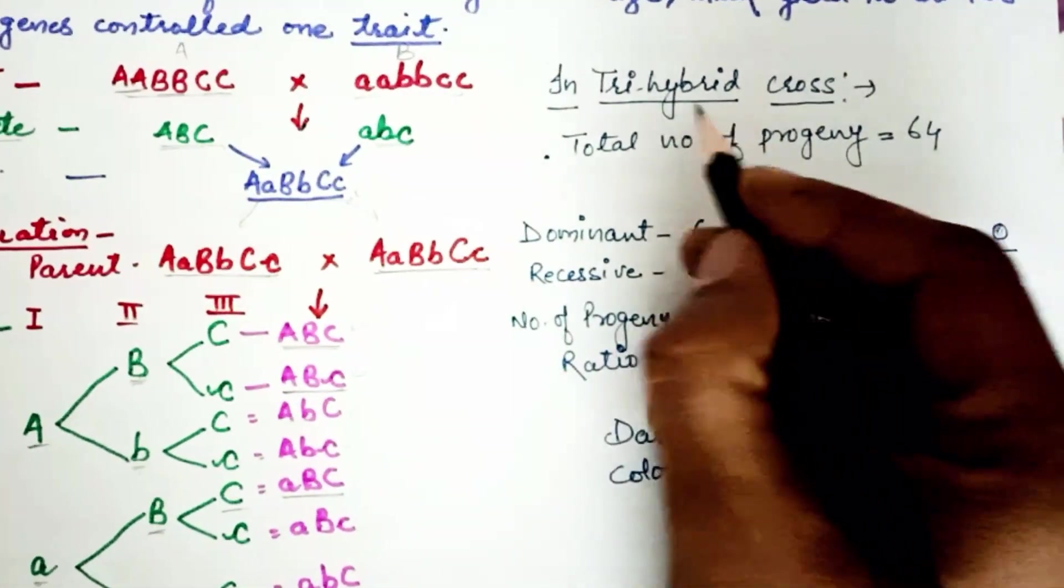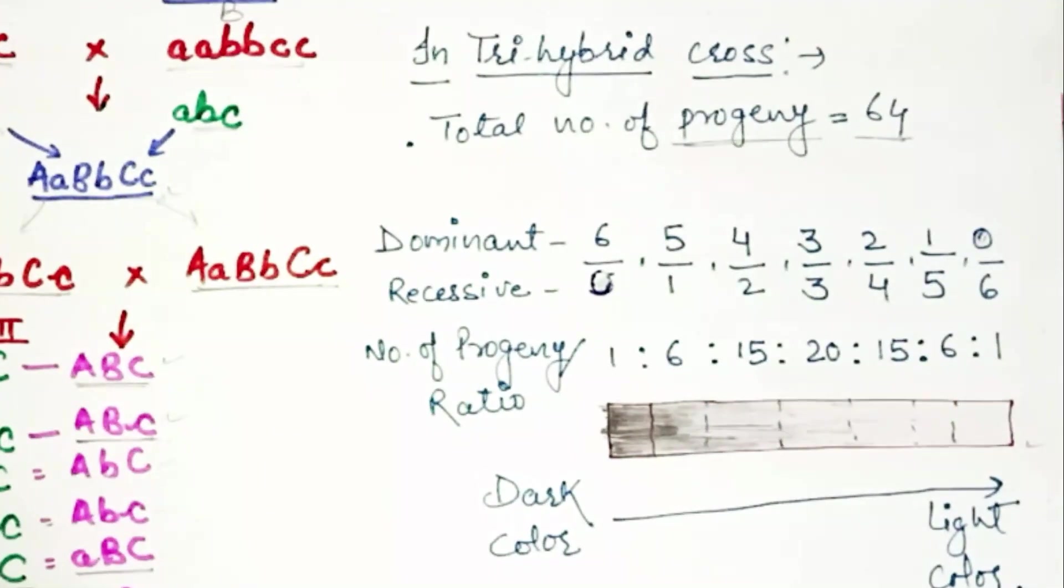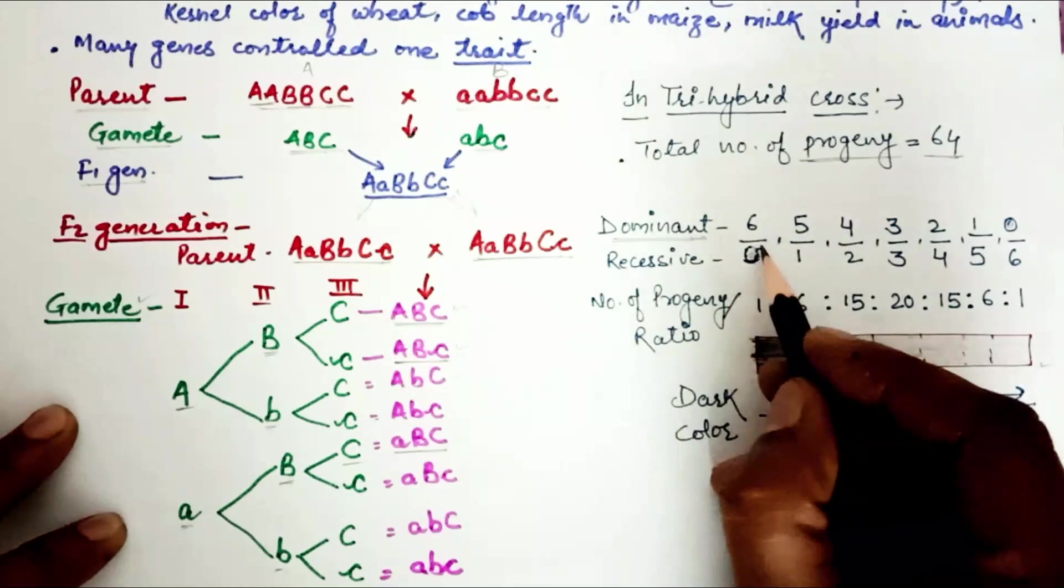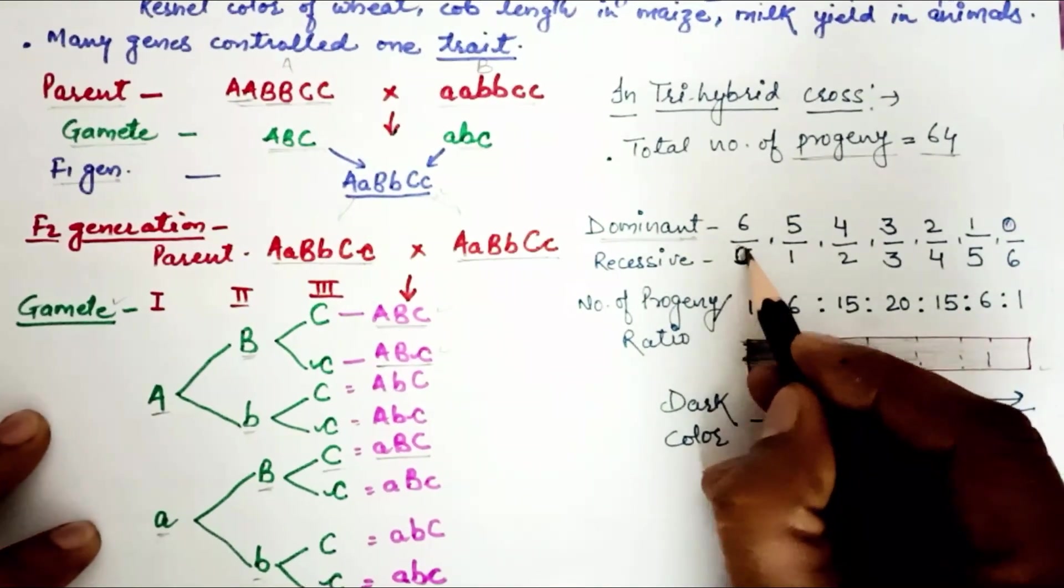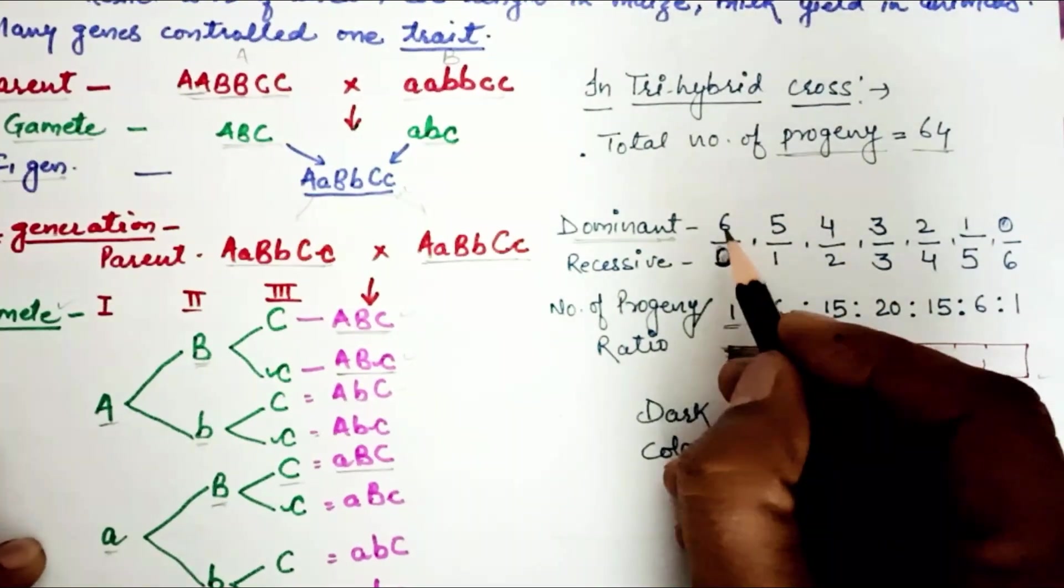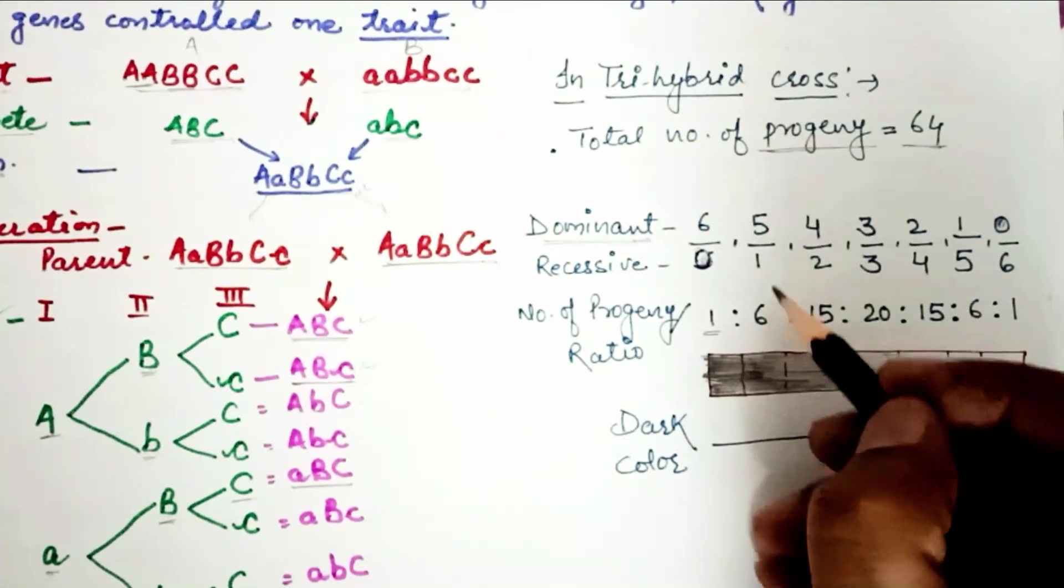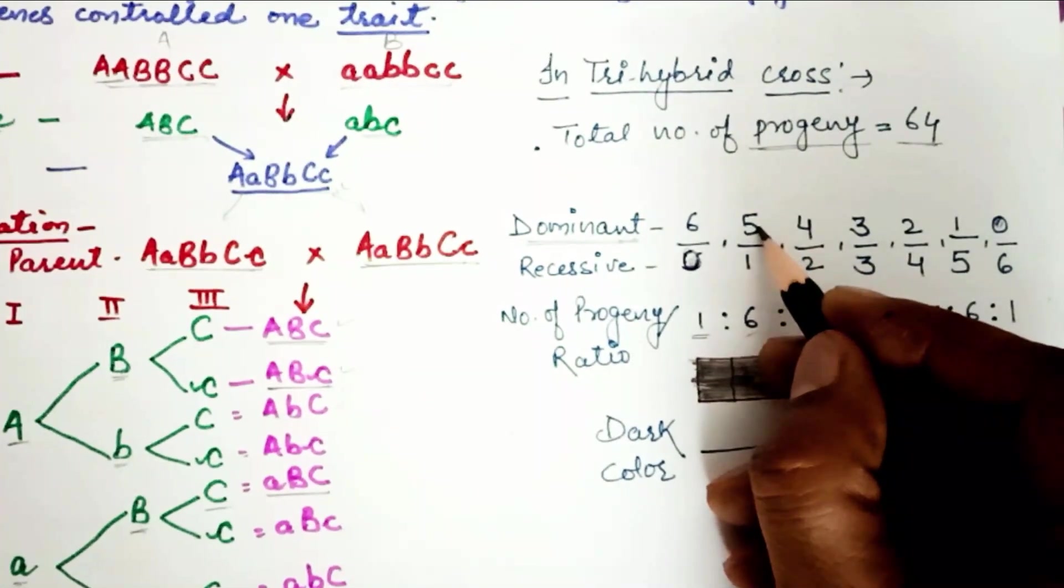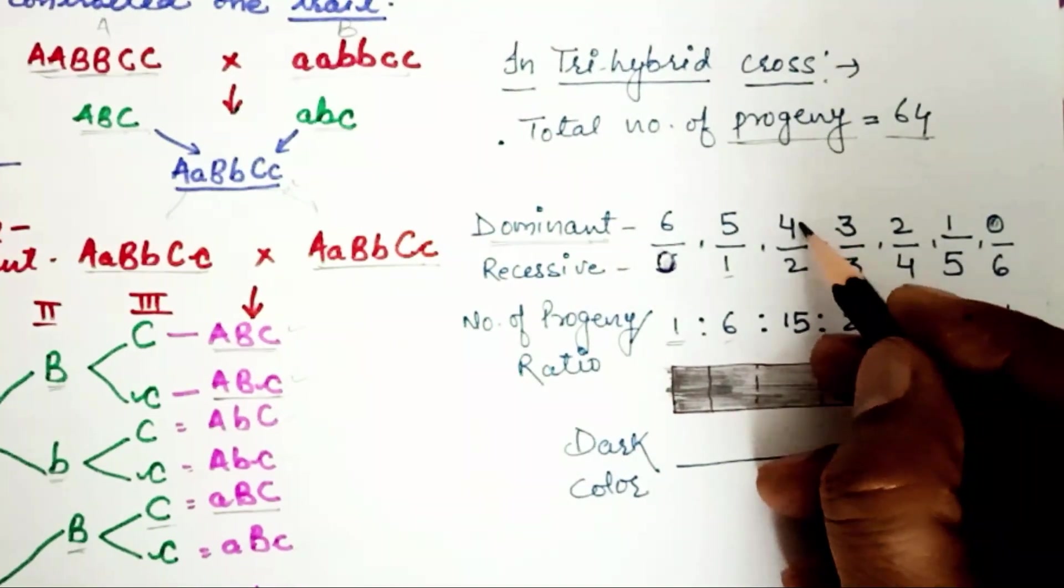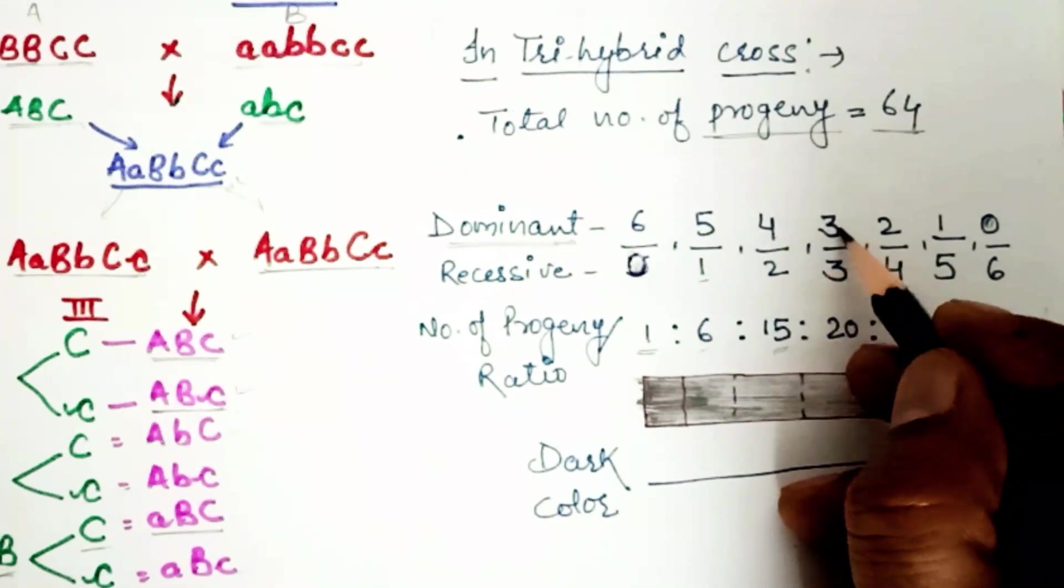Total number of progeny: the dominant alleles we have written at the top and the recessive alleles on the lower side. Number of progeny: 1 progeny has 6 dominant alleles and 0 recessive alleles. Then 5 dominant alleles and 1 recessive, then 4 dominant and 2 recessive.